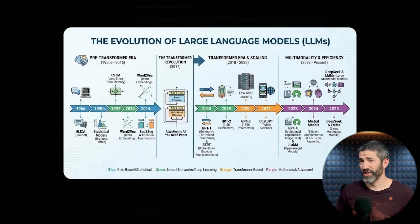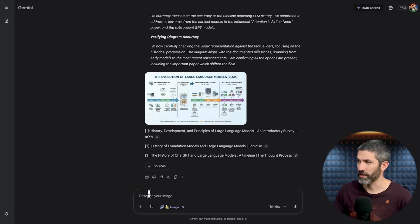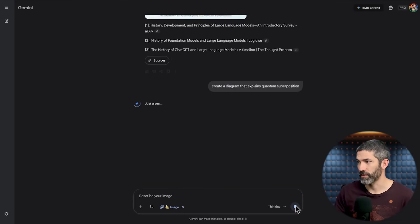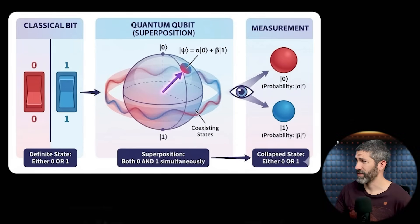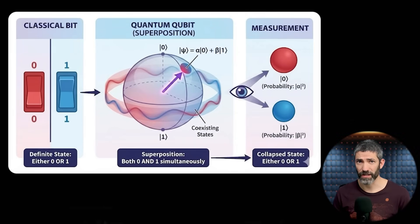This is such an insane thing to be able to do this easily. And as you can see, this was just one-shot text-to-image generation — it wasn't image editing, which was the area that the original Nano Banana really excelled at. Let's do another: create a diagram that explains quantum superposition. That's a super nice design. It illustrates the concept well and is just overall very aesthetic.